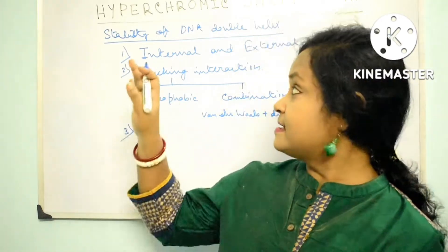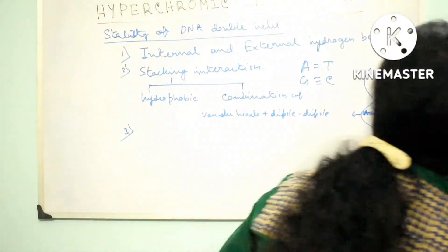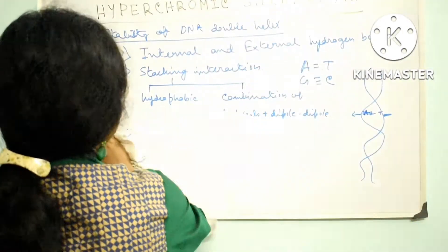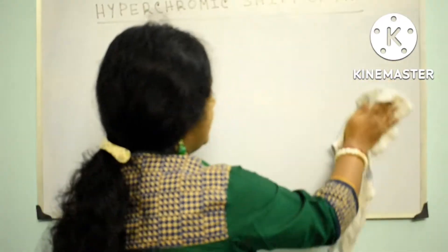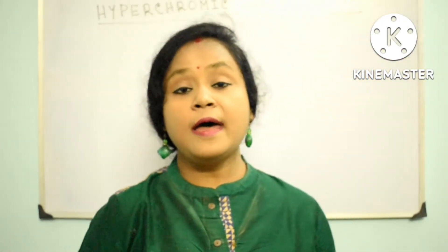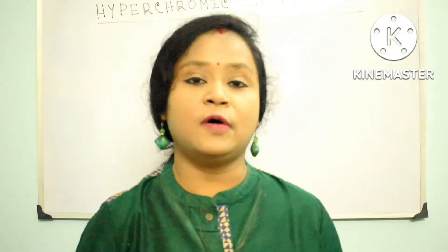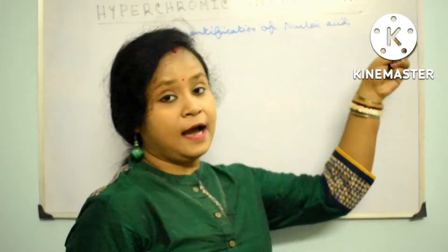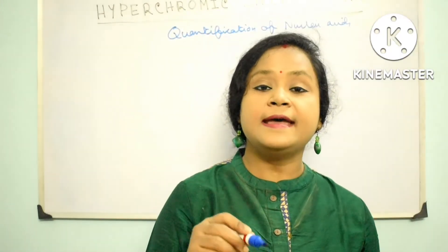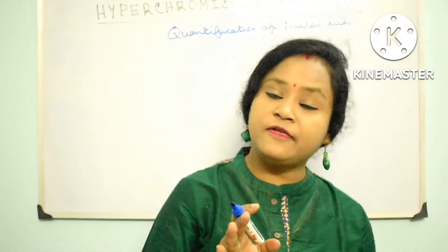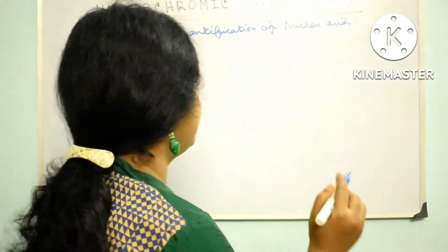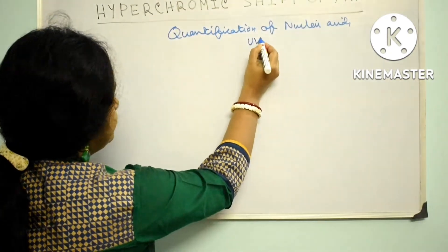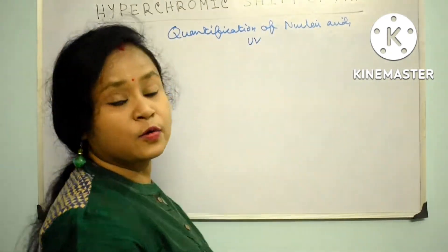So these are the three points for stability of the DNA double helix. After that, I want to discuss quantification of nucleic acids. Nucleic acid means DNA and RNA. Ultraviolet spectroscopy is used to quantify nucleic acids.